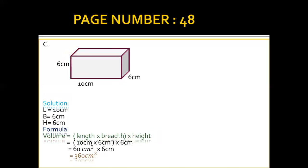Part C: length, breadth, and height are all mentioned. Length is 10 cm; breadth and height are both 6 cm. Volume = length × breadth × height = 10 × 6 × 6 = 360 cm³. This is the volume of the given cuboid.